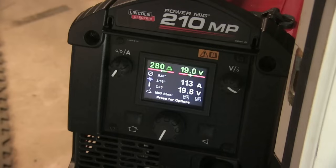These are the settings that I'm going to start off using: 19 volts, 280 inches a minute with 0.030 wire. That's 0.8mm ER70S6 wire.